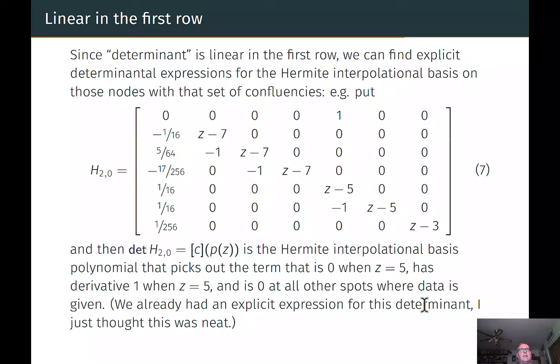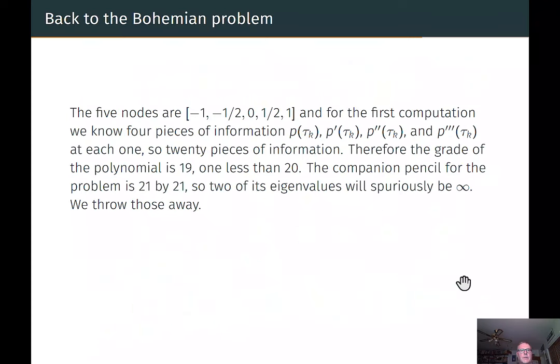So here's a curiosity that I just thought about when preparing these slides. If I, because the determinant is linear in the first row, we can find a whole bunch of matrices whose determinant are exactly the elements of the Hermite interpolational basis. So here, for example, is one where I've replaced the C with a 1 and everything else with a 0. So the determinant of that is the coefficient of C in the Hermite interpolational polynomial. So that is a polynomial which is 0 when z equals 5, but has derivative 1 when z equals 5, and is 0 at all the other spots where data is given. Now we actually have an explicit expression for this determinant, but I just thought that was kind of neat.